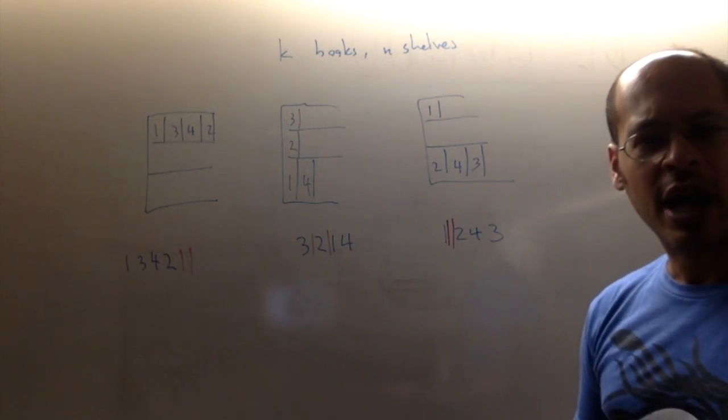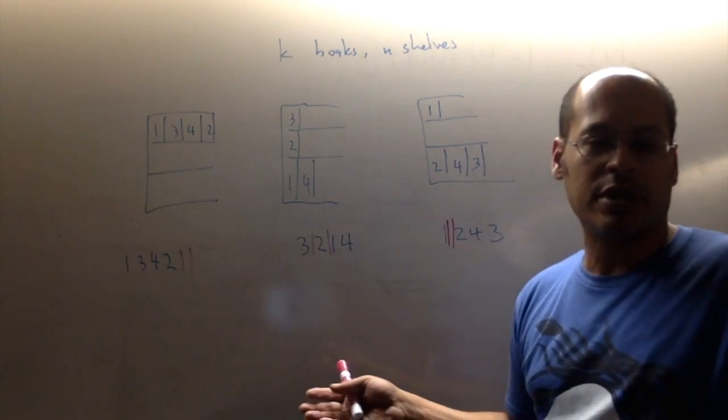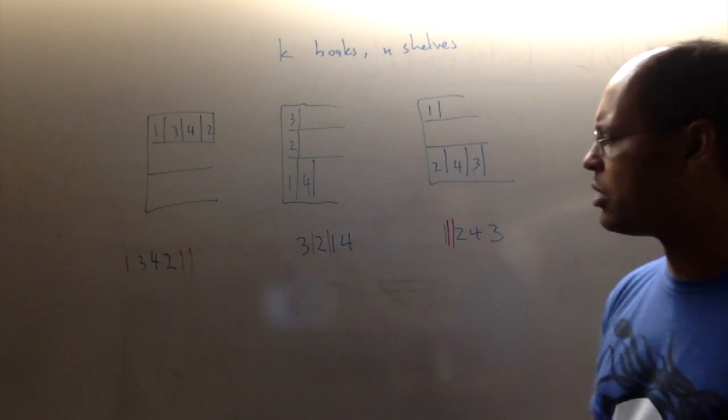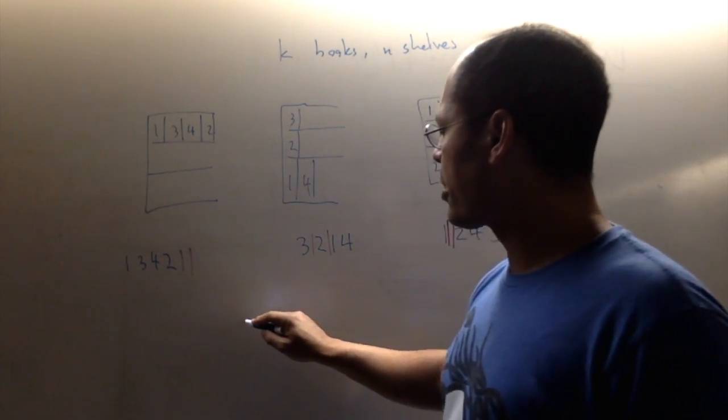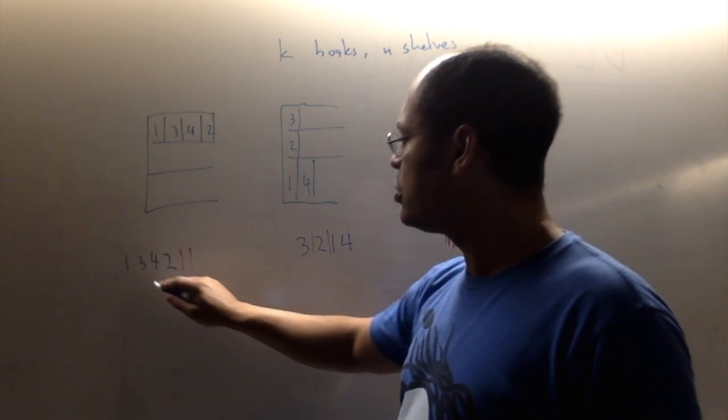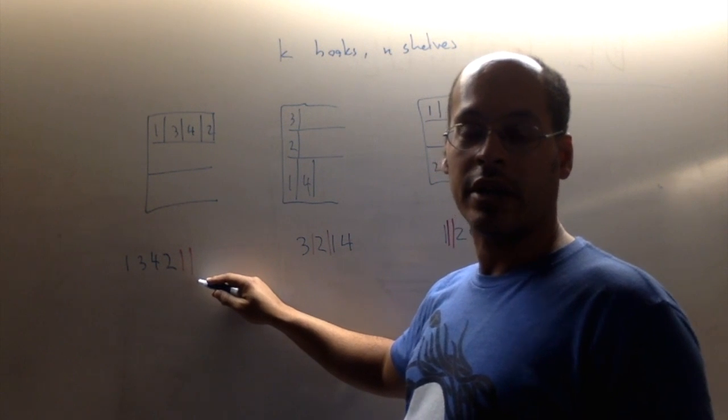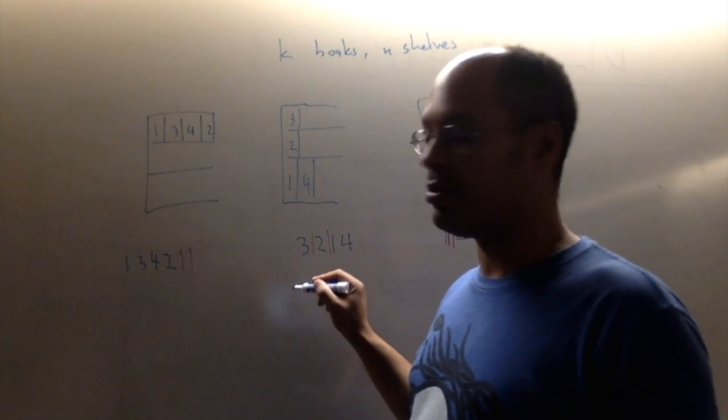So let's think about how we could count the number of representations of this sort, which is then going to also count the number of books on the shelf. So what is one of these representations? Really what it is, is I have two things. On the one hand, I have a permutation. And on the other hand, I have a description of where the shelves are supposed to go.